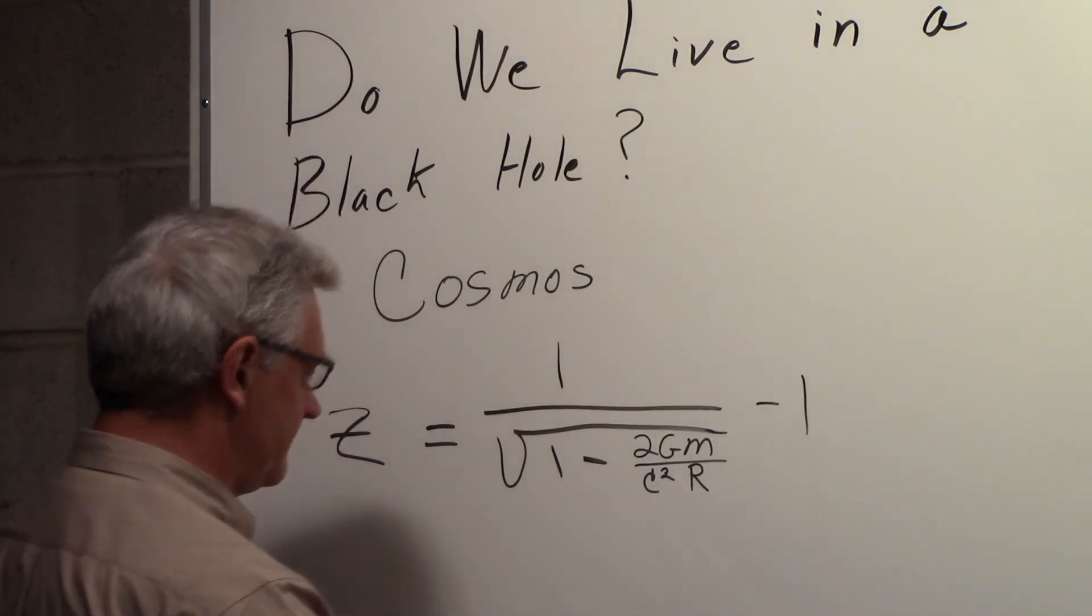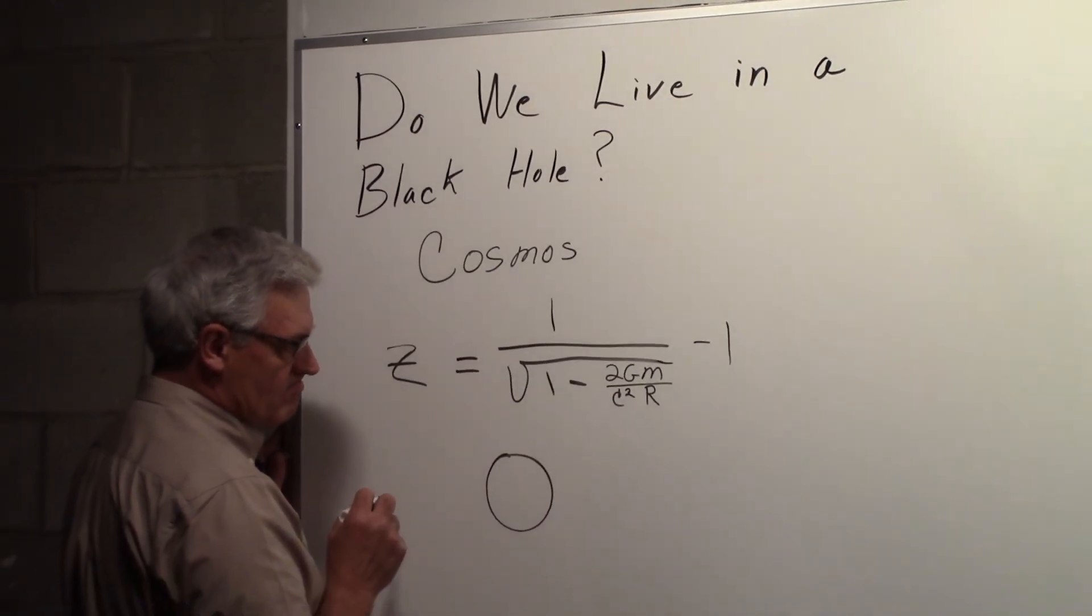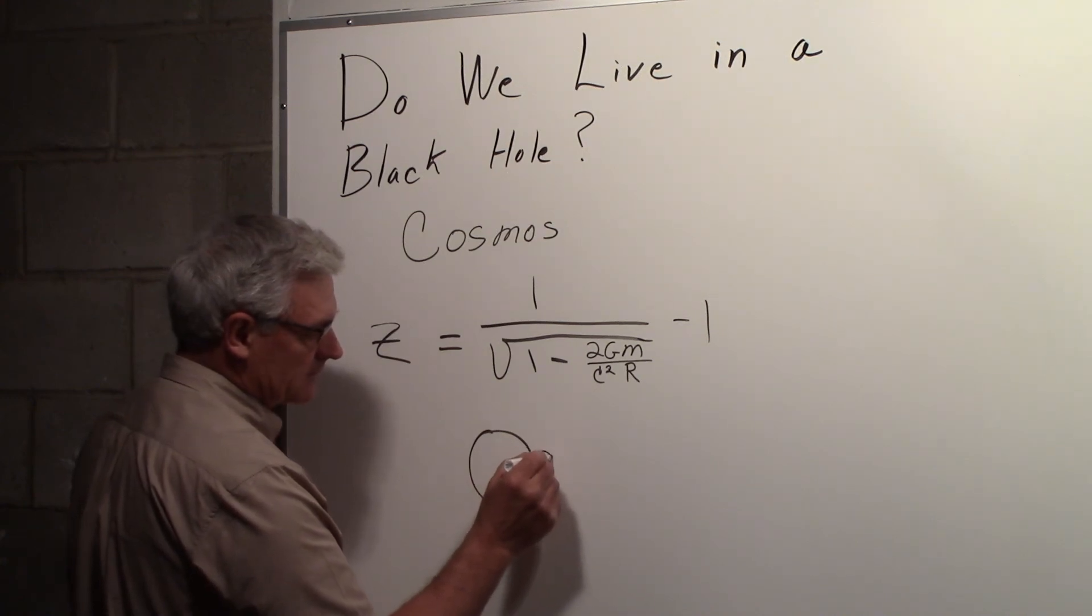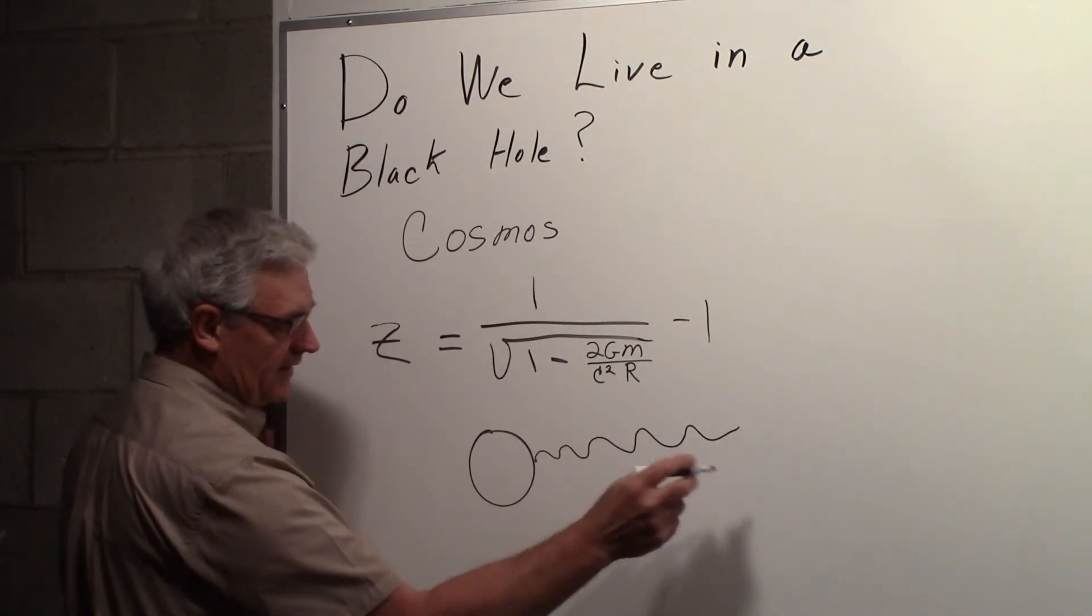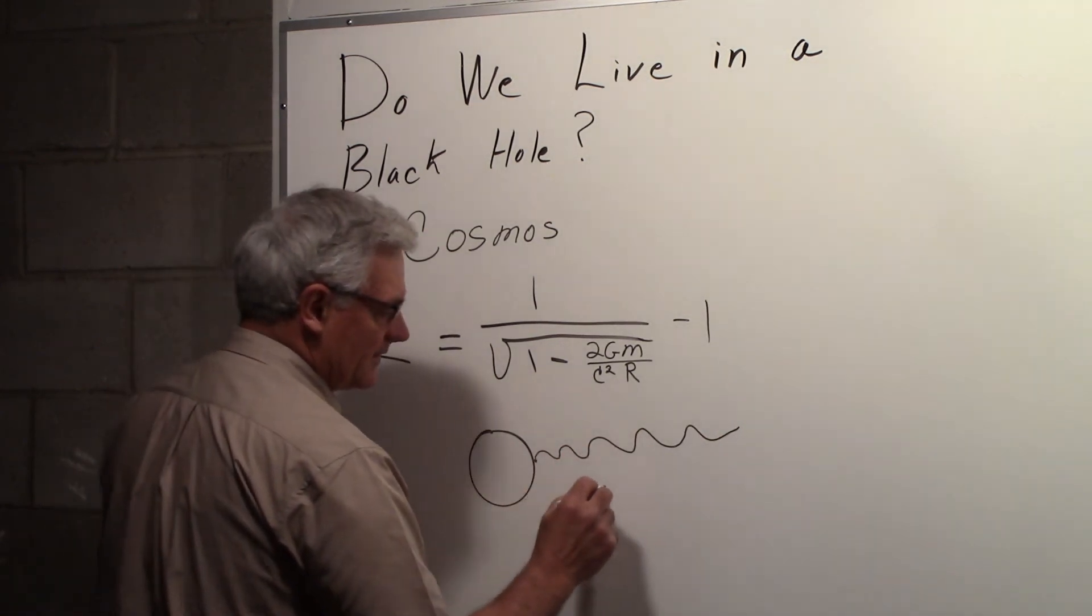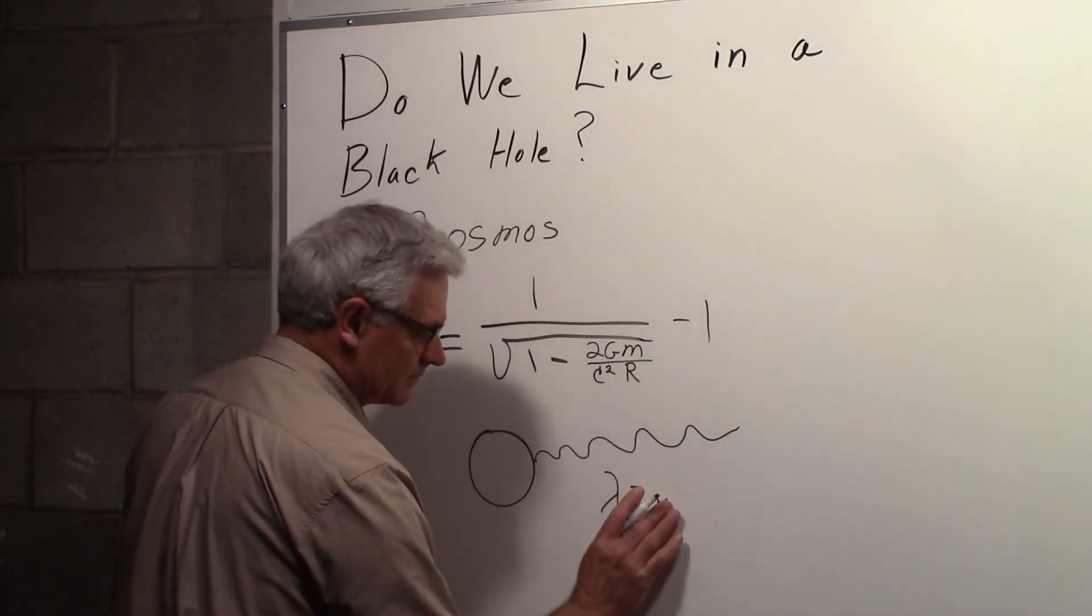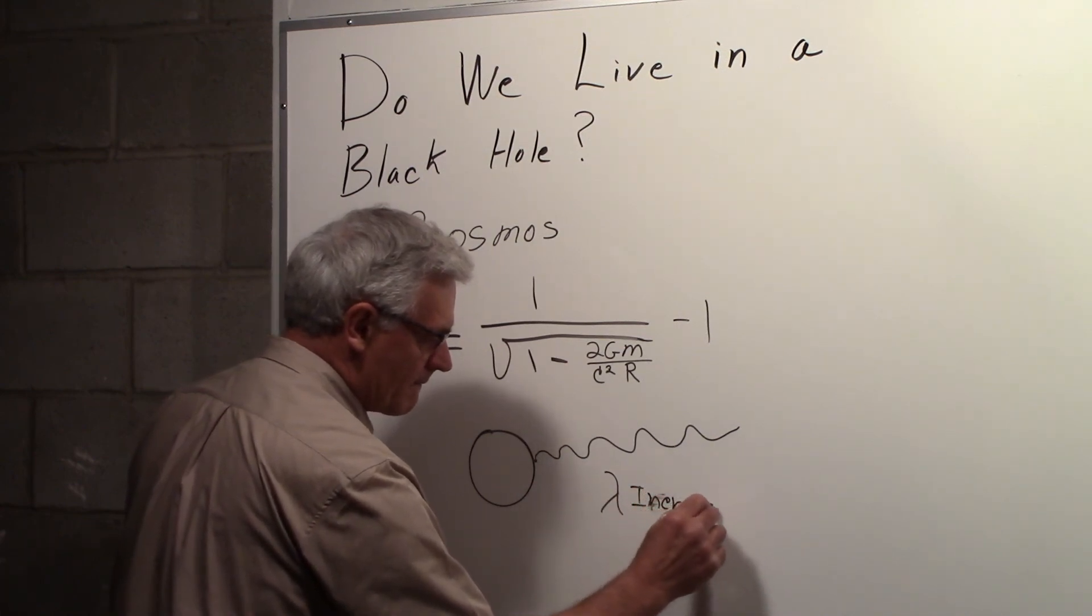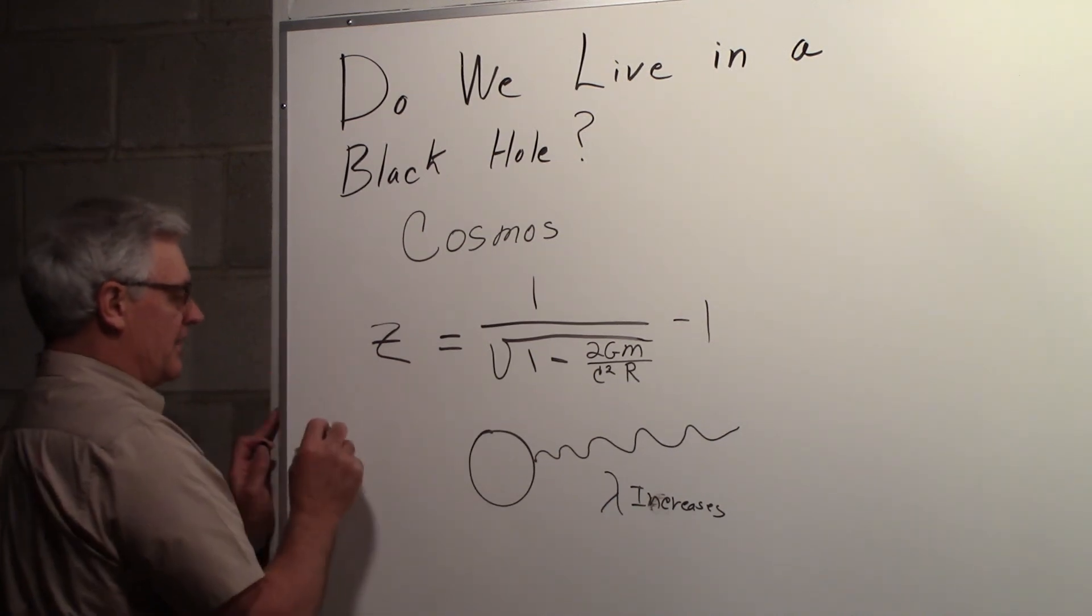So what does this mean? Here we have some massive body, and we imagine that we're emitting some light from it. As the light goes out further and further, the wavelength increases, so lambda increases, and we call this the gravitational redshift.